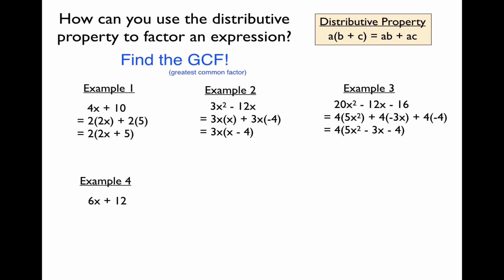For example 4, try using the greatest common factor to factor the expression. You might come up with a common factor of 2, 3, or 6 — because all of those factors are common. But to factor completely, you need to use the greatest common factor. If you factored out a 2 or a 3, you factored correctly but not completely — there are still factors left in there. The greatest common factor is 6, so the complete factorization is 6 times the quantity x plus 2.